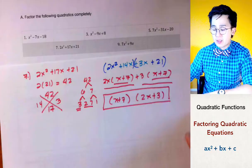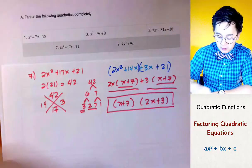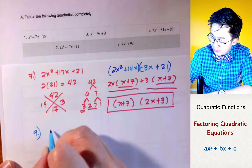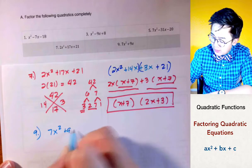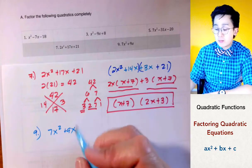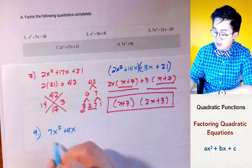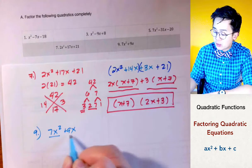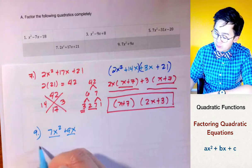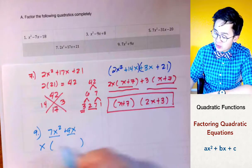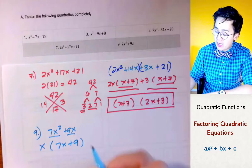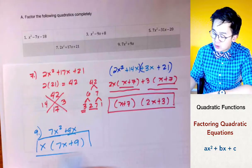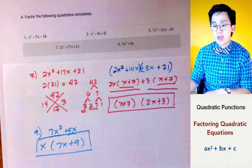The last problem, number 9, is the easiest to factor. We have 7x squared plus 9x — the constant term is missing. To factor this we just need the GCF. The greatest common factor between the two terms is simply x, leaving (7x + 9) inside. So the factored form for problem number 9 is x(7x + 9).